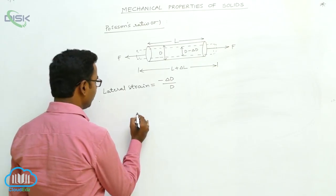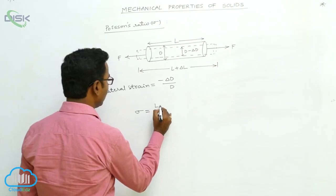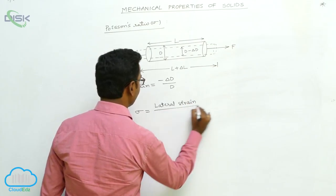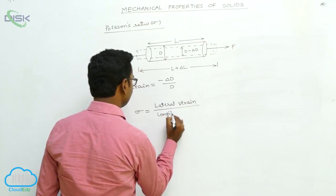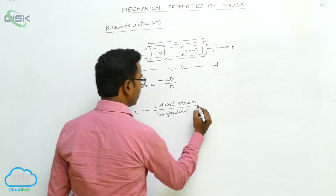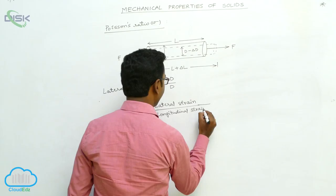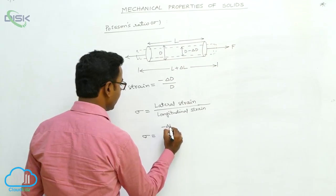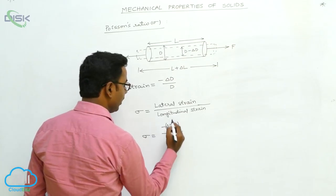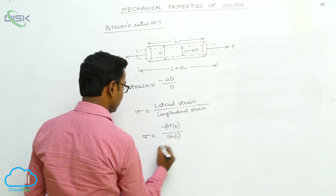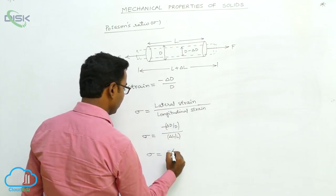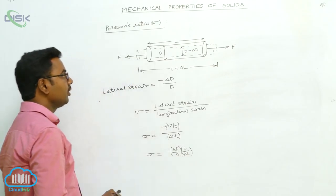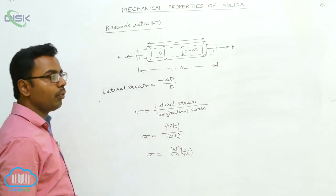Now how do we define Poisson's ratio? Poisson's ratio is defined as the ratio of lateral strain to the longitudinal strain. So sigma equals lateral strain, which is minus delta D by D, divided by longitudinal strain, which is delta L by L. This can also be written as sigma equals minus delta D by D into L by delta L. There are no units for Poisson's ratio.